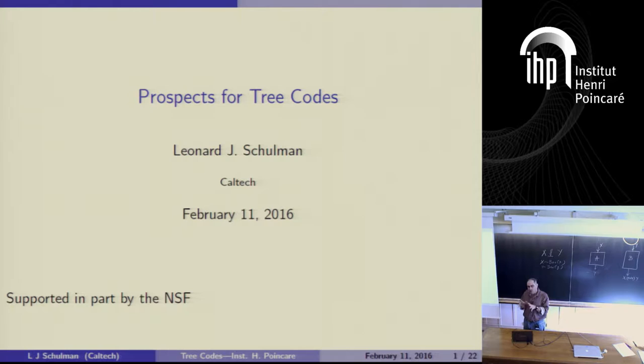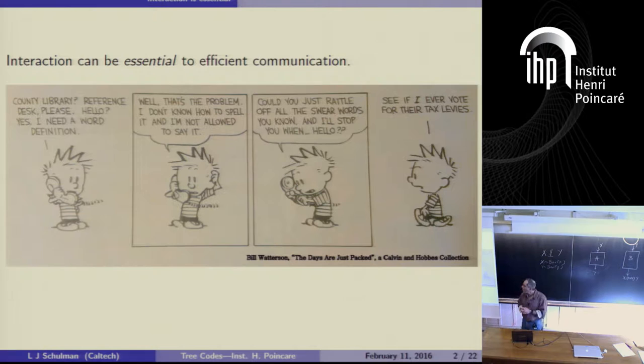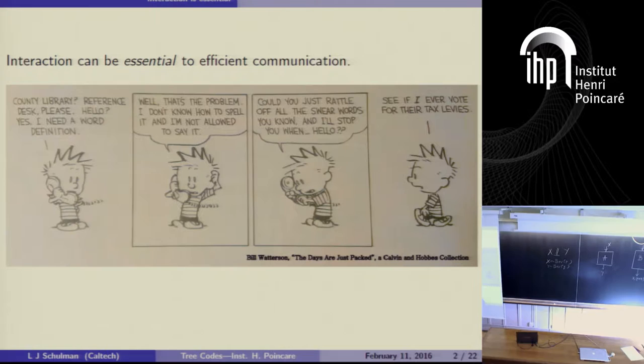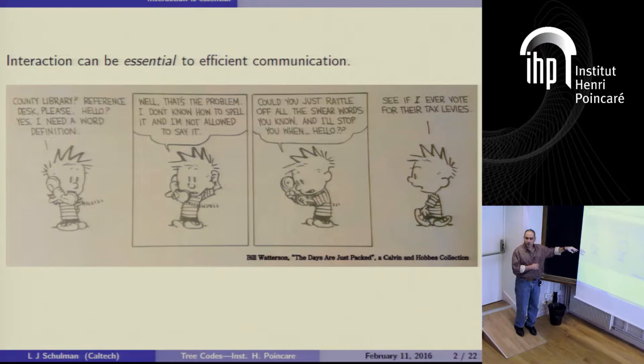The first thing I'm going to show you is a piece of literature — great 20th century literature highly relevant to the communication complexity and interactive communication problem. As far as I know, the connection was unnoticed until about a year ago. This piece of literature is from the famous Calvin and Hobbes comic strip, and I'll walk you through it.